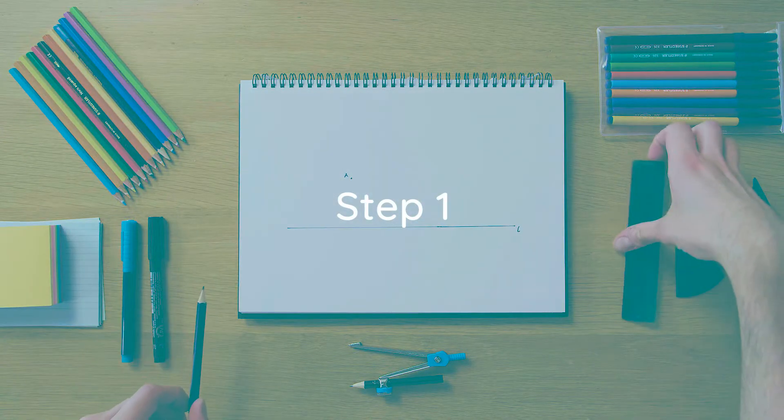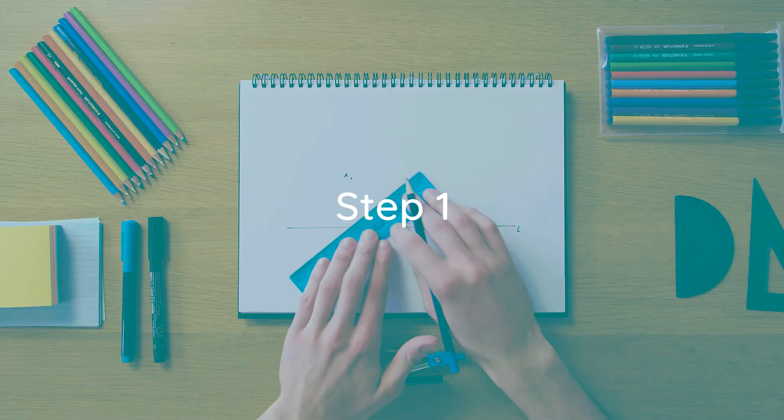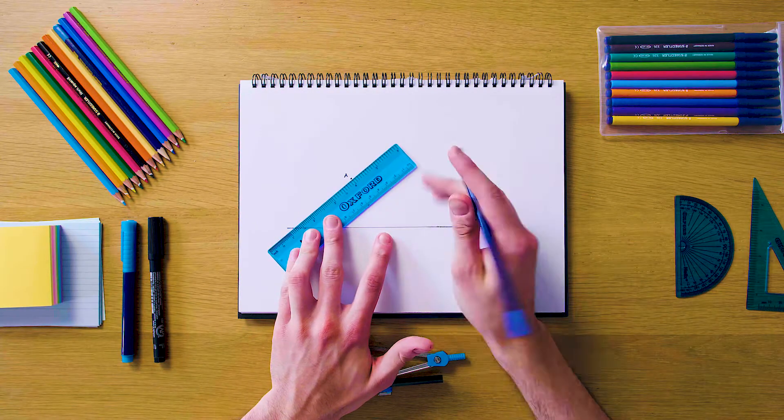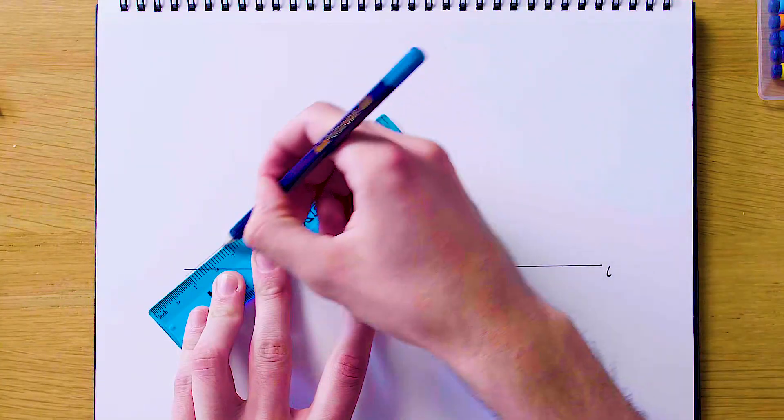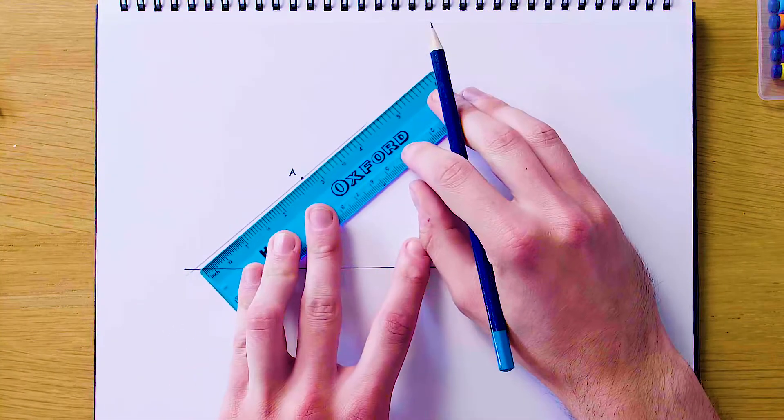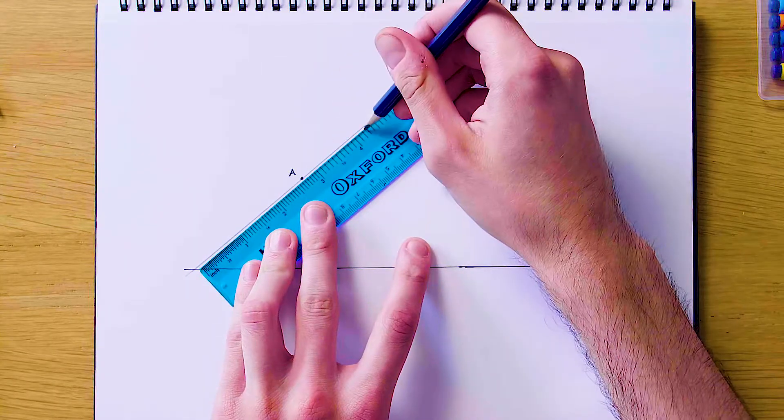Our first step is going to be to just draw a line which passes through the point A and also crosses L. I usually draw this at a nice acute angle here, and you can do this wherever you like, but this is kind of my favorite way to do it. So we're just going to make sure that's long enough and goes up here.